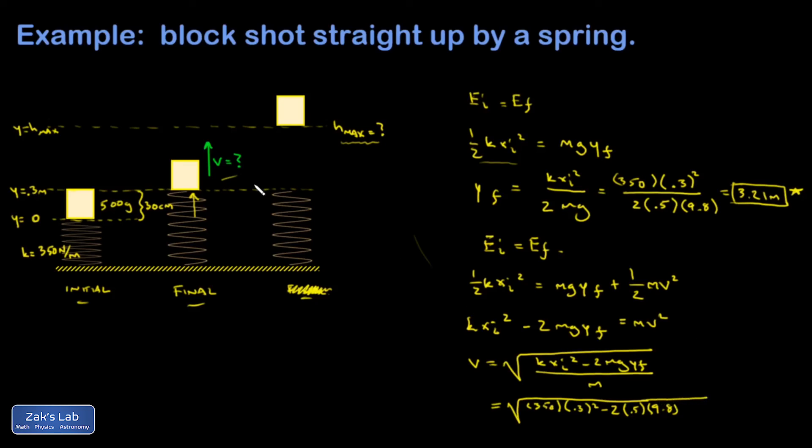Y final here, 30 centimeters higher than when I started. So 0.3. All divided by the mass, which was 0.5 kilograms. And when I ran the numbers on this, I got 7.56 meters per second.